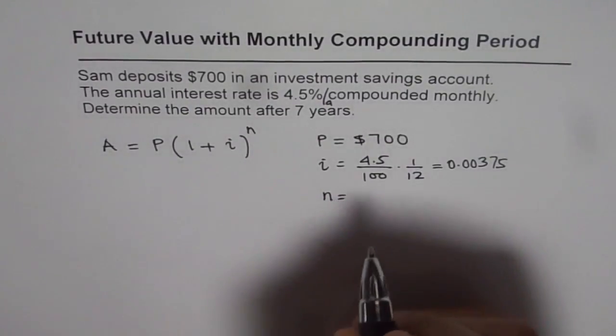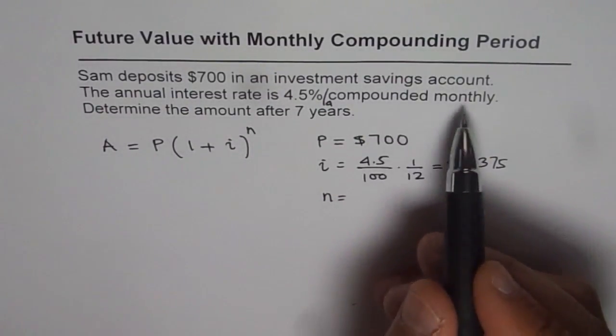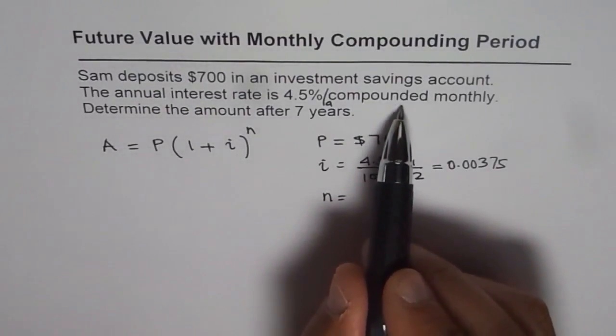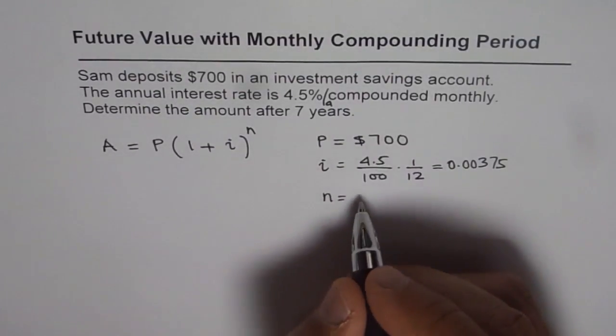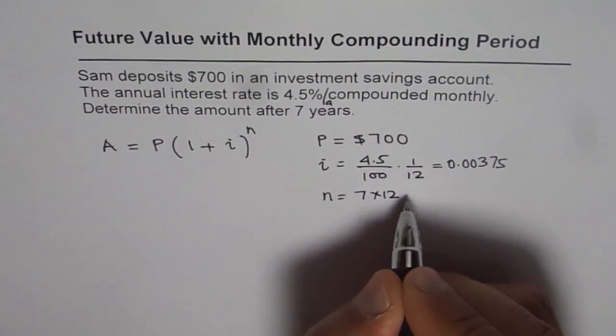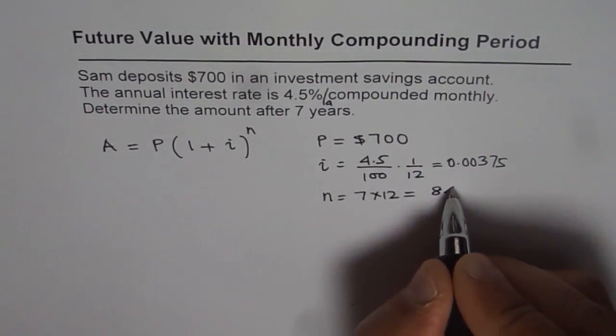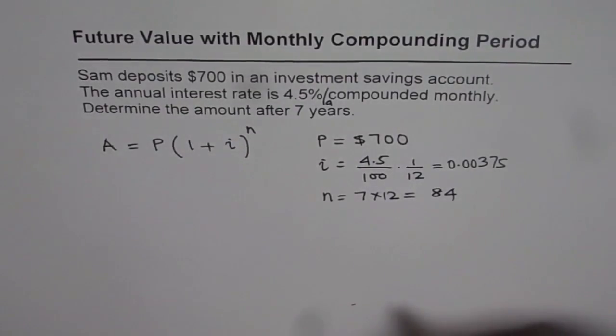Now N is number of times it is compounded. So in 7 years since it is being compounded monthly, it will be compounded 7 into 12 times, which is 84 times. So that is the value of N.